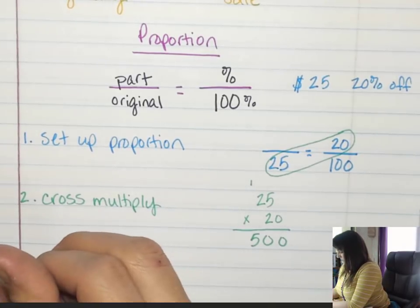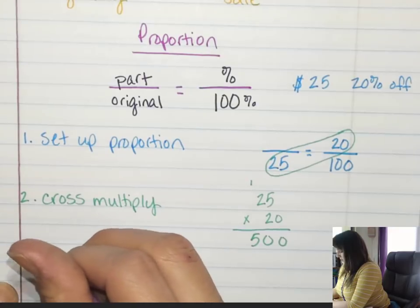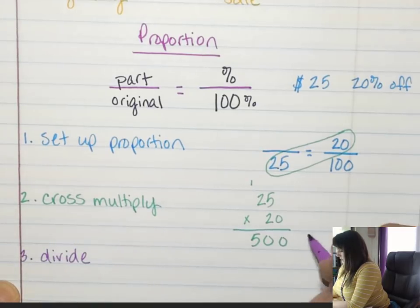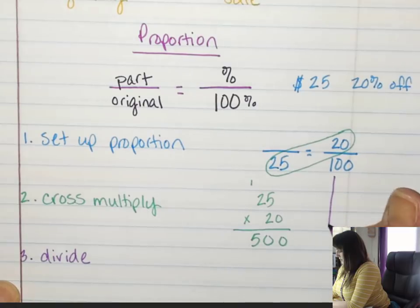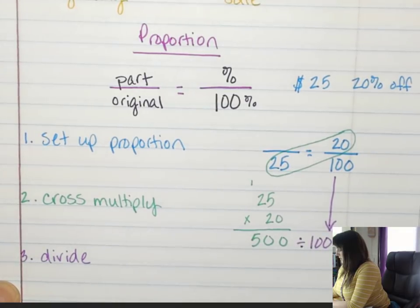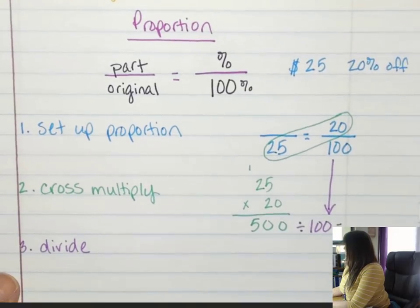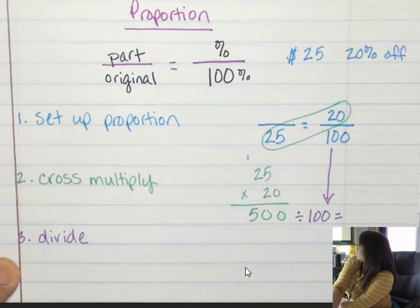Yep, so step three is to divide. So I have to divide by 100. 500 divided by 100 is 5.